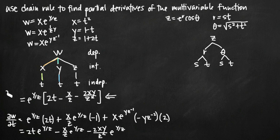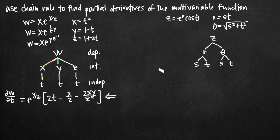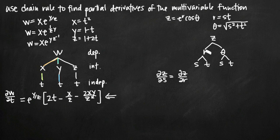For the first problem our final answer was the partial derivative of w with respect to t — one equation for the dependent variable in terms of the independent variable. Here we're going to have two separate equations: one for the partial derivative of z with respect to s, and one for the partial derivative of z with respect to t. Following the tree diagram, the partial derivative of z with respect to s equals the partial derivative of z with respect to r times the partial derivative of r with respect to s, plus the partial derivative of z with respect to θ times the partial derivative of θ with respect to s.